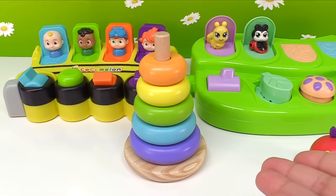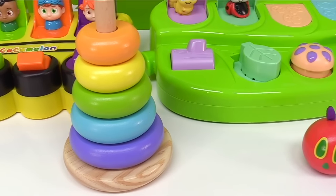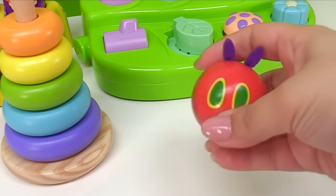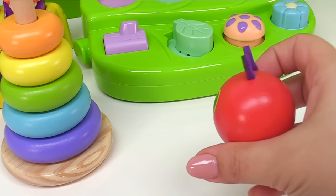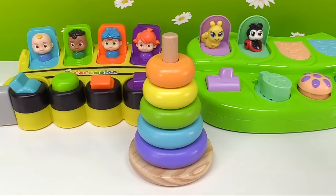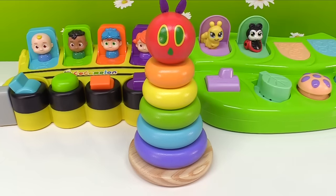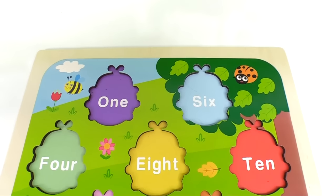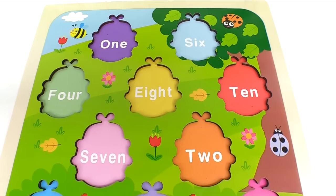We seem to be missing something. What are we missing? We're missing the head. It's in the shape of a circle and it's red. Let's add it to our tower. And what do we have? It's a very hungry caterpillar!